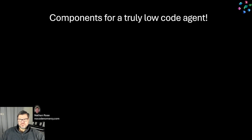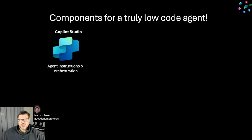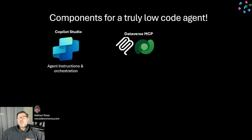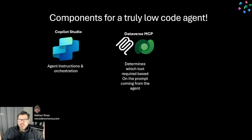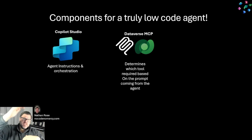So if we wanted to do this, here are the components that we'd use to start putting this together. First, in Copilot Studio, we've got our agent instructions and all of the orchestration. Next, we connect to Dataverse MCP because this is what does the work for us. What's really cool about MCP, beside the fact that it is incredibly easy to hook up to an agent, is that Dataverse MCP has a whole list of things it can do.